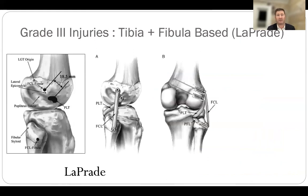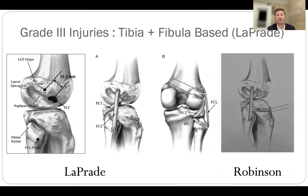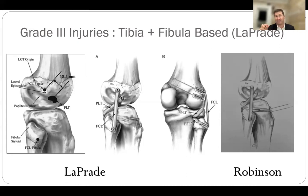For grade 3 injuries I do a tibia- and fibula-based technique, initially described by LaPrade. I've adapted the graft type using Robinson's technique — Rob used a split Achilles tendon giving two tails, one forming the LCL passing through the fibula tunnel and the other as the popliteus. I've adapted that to a single allograft or semitendinosus passed over an adjustable loop in the tibial tunnel — a single loop running from the LCL down to the anterolateral fibula tunnel, then back doubled into the tibia as the popliteus, adjustable on the tibial side via an adjustable button.